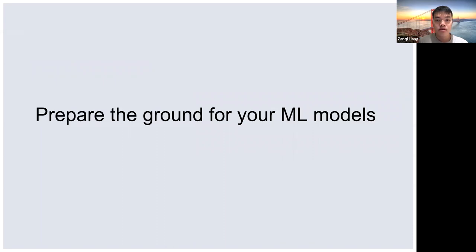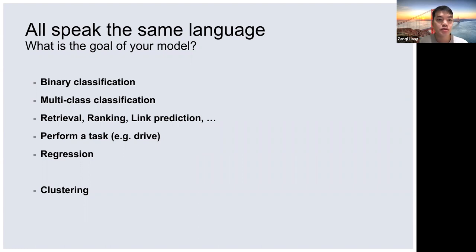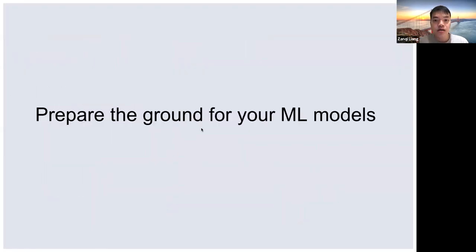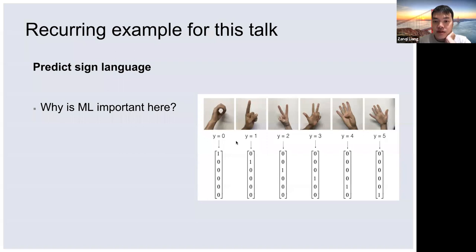Let me go over some terminology so everyone can be on the same page. These are terms we will meet in the first course of machine learning: binary classification, multi-class classification, ranking, performance tasks like regression or clustering. What about our problem? It's definitely a classification for each sign — we want to determine a word in the sign language. So it's a classification, but is it binary? No, there are a lot of outcomes. So this is a multi-class classification.